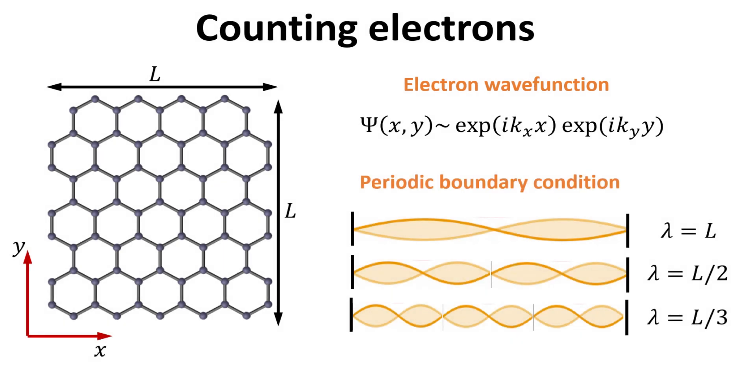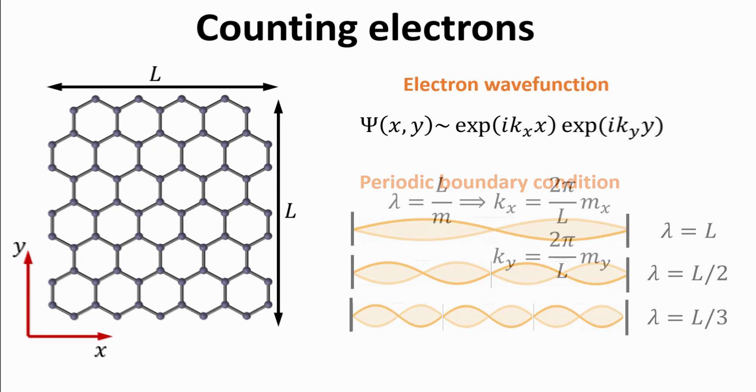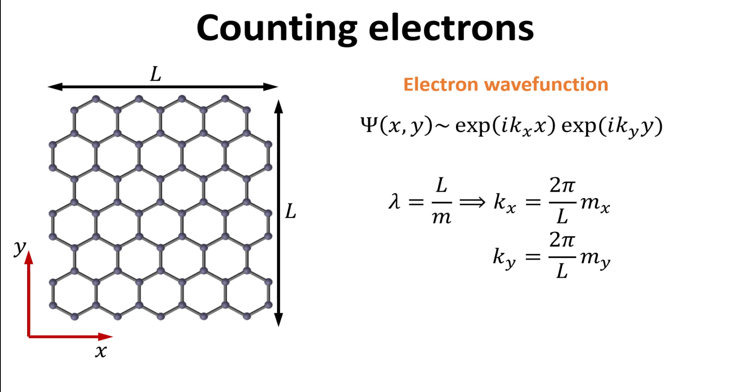Assuming a periodic boundary condition, the wave vector would have to be chosen such that integer multiples of its wavelength can fit within the graphene. Thus, the electron wavelength should be L divided by M, where M is an integer. The wave vector, which is defined as 2π divided by wavelength, is then given as follows, where MX and MY are integers.